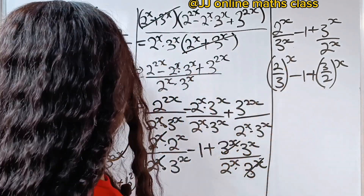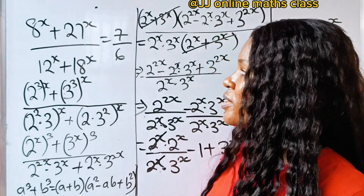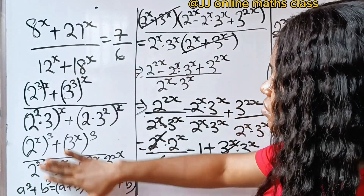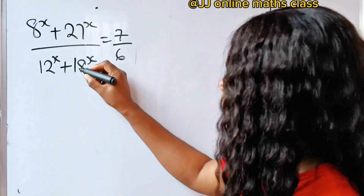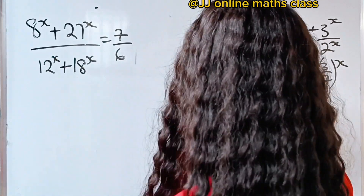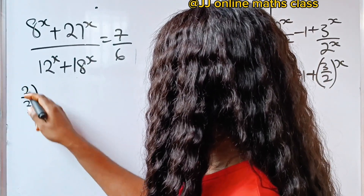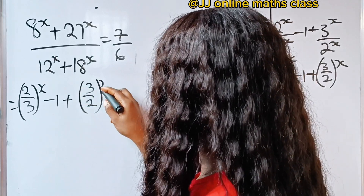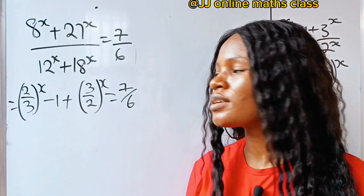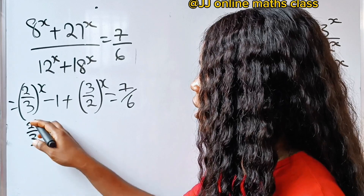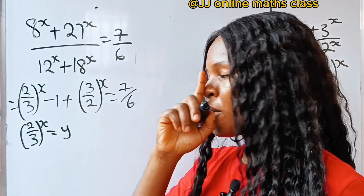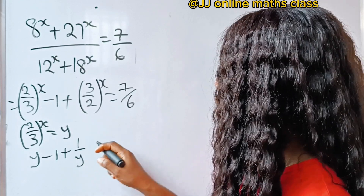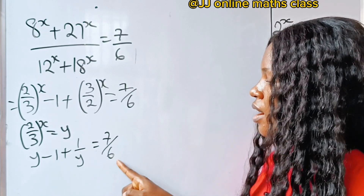Now we equate this to 7/6, since that is what we've been simplifying — the left-hand side of the equation. So (2/3)^x minus 1 plus (3/2)^x equals 7/6. Let's let y equal (2/3)^x. That means the equation becomes y minus 1 plus 1/y equals 7/6.